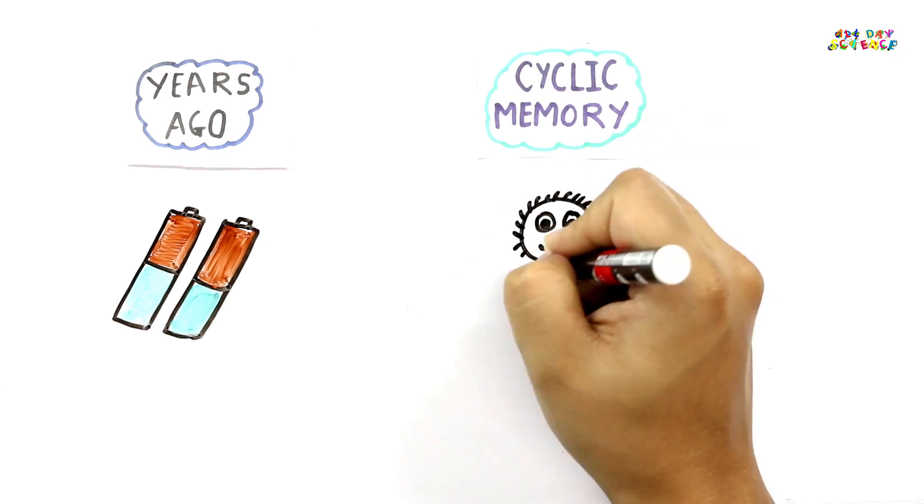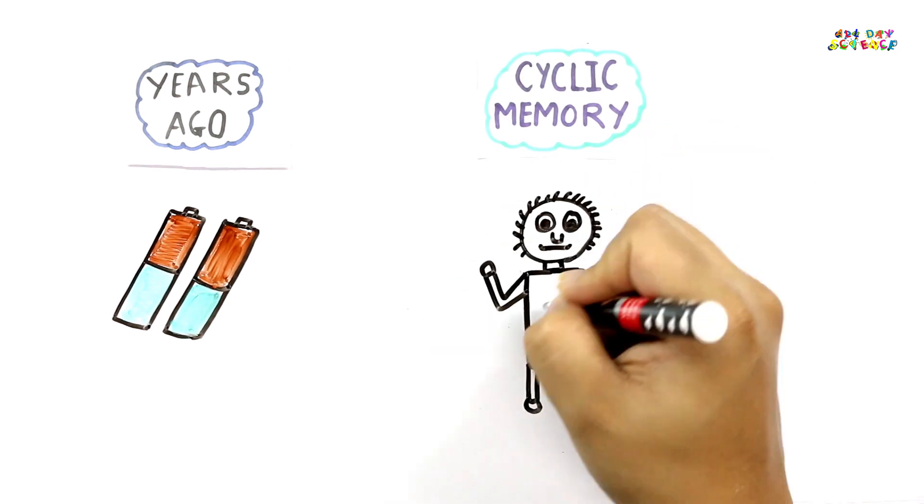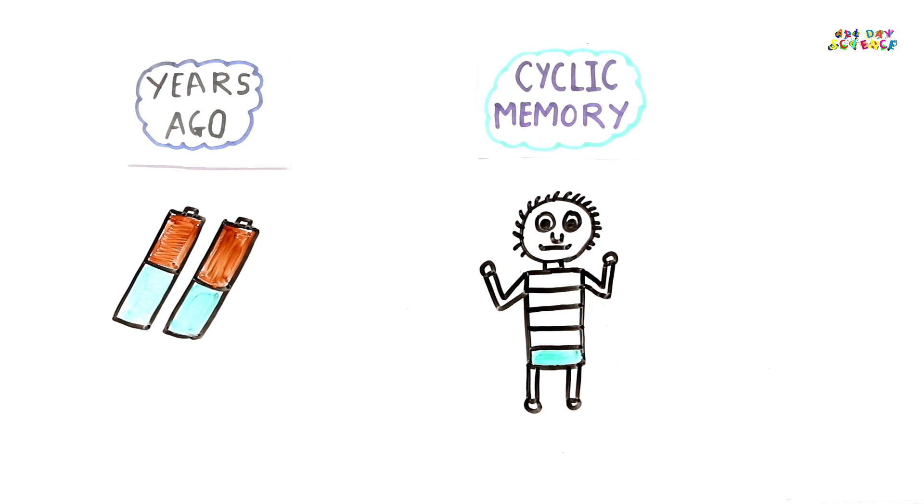Nickel-based batteries exhibited a tendency to have a cyclic memory, which means that if they weren't given full charges in between cycles, they might forget their full capacity and remember the point to which they were last charged as being the maximum capacity.